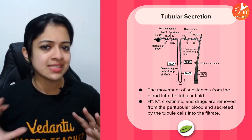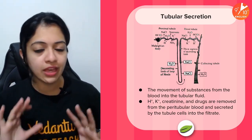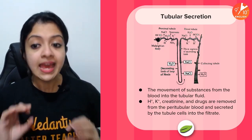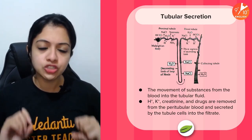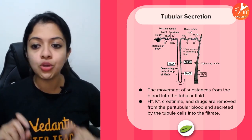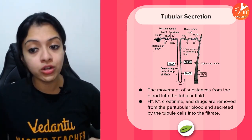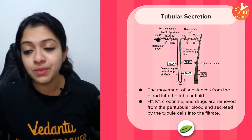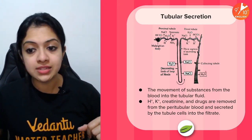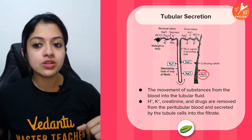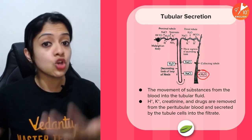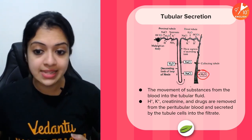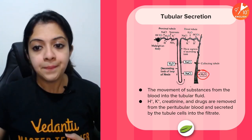In the collecting tubule, if there is any excess water detected in the urine, it gets reabsorbed depending upon water availability in your body. ADH has the ability to take care of those levels — if there is a shortage of water in your body, as much water as is required gets reabsorbed here by the collecting tubule.